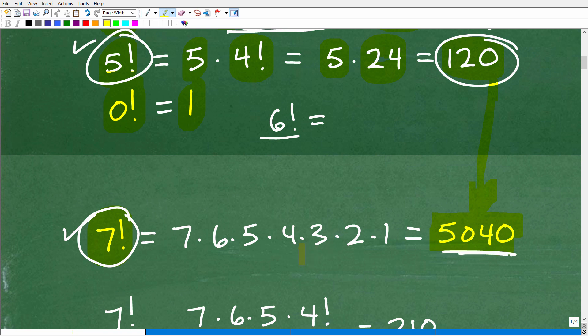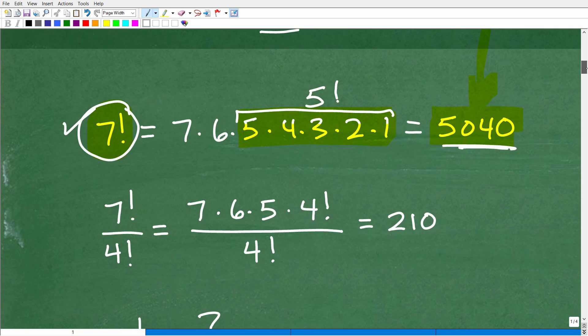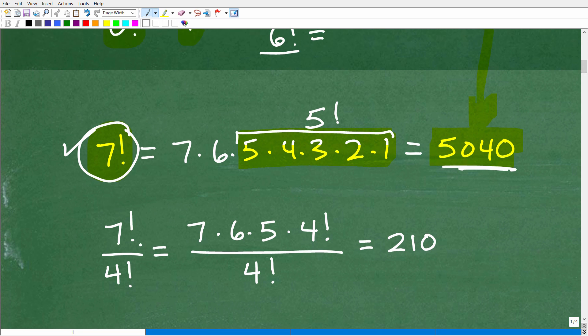And again, if we take a look at 7 factorial, it's 7 times 6 times 5 times 4 times 3 times 2 times 1. So here, this part of 7 factorial is 5 factorial, right? So this is 5 factorial right there. So let's take a look at this again. So 7 factorial, actually, I'm going to kind of break it. I'm going to kind of do this a little bit differently.